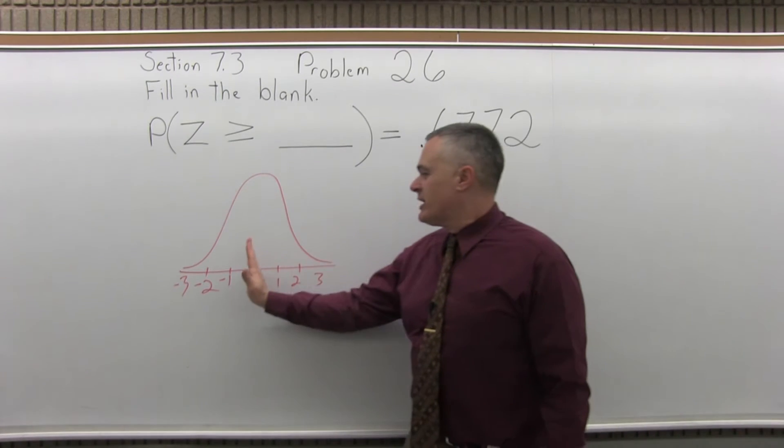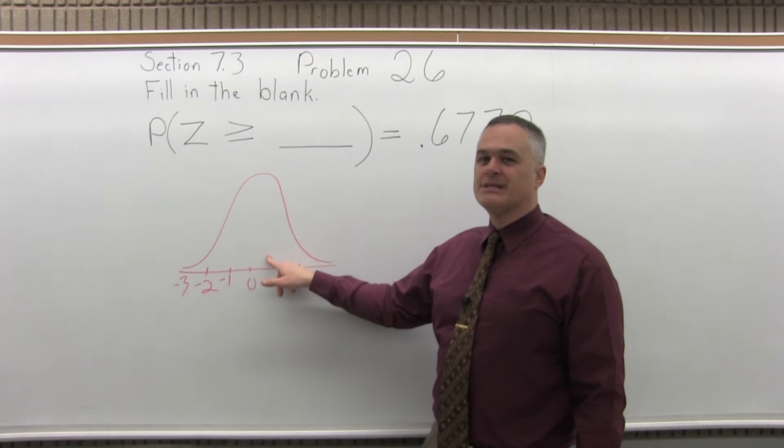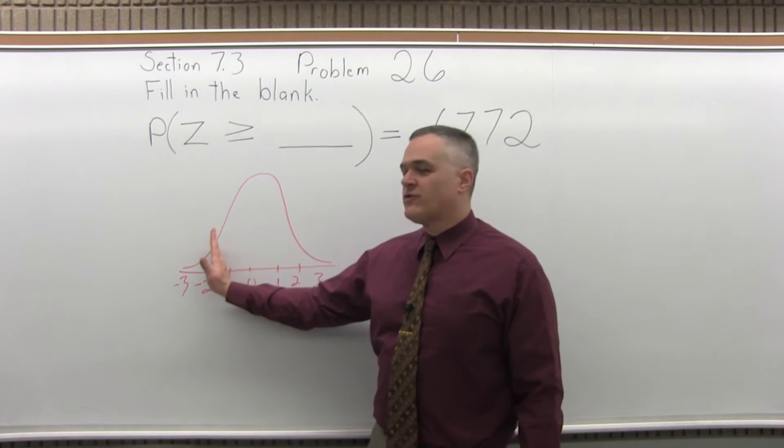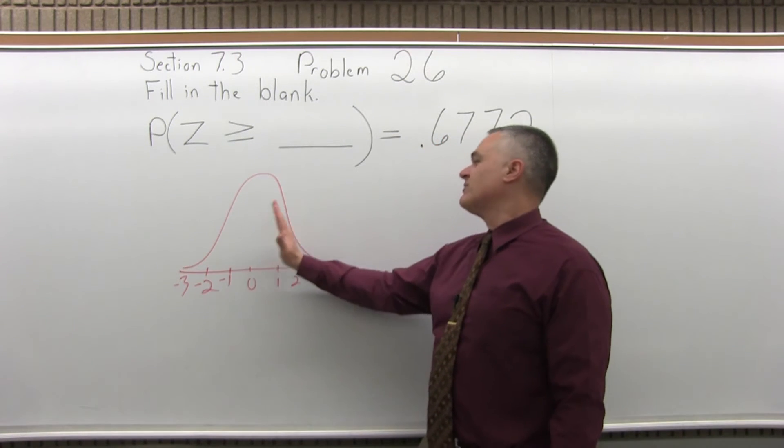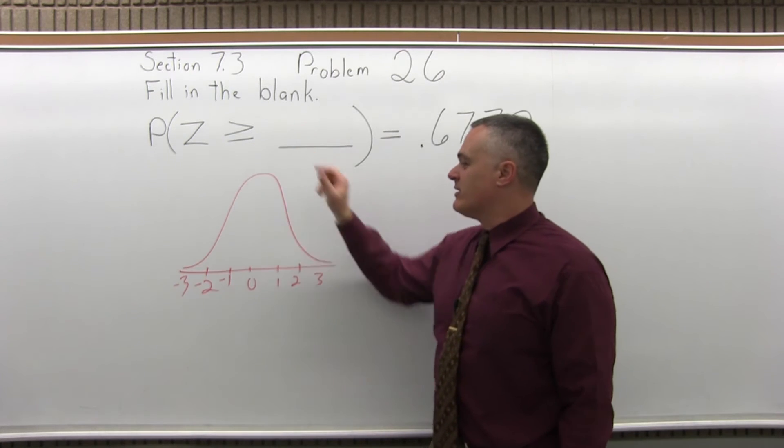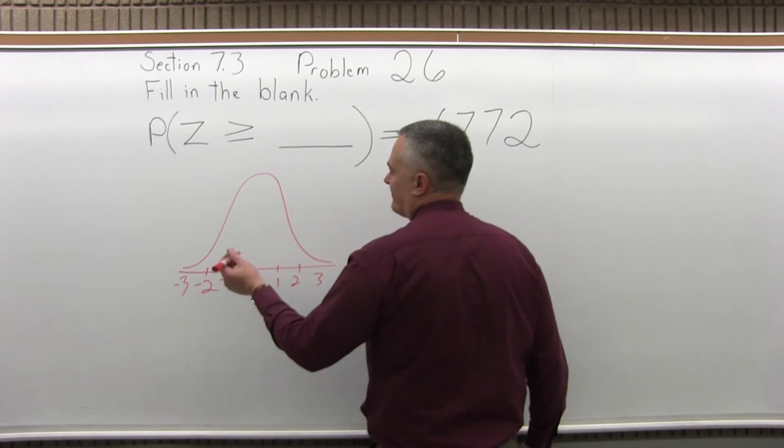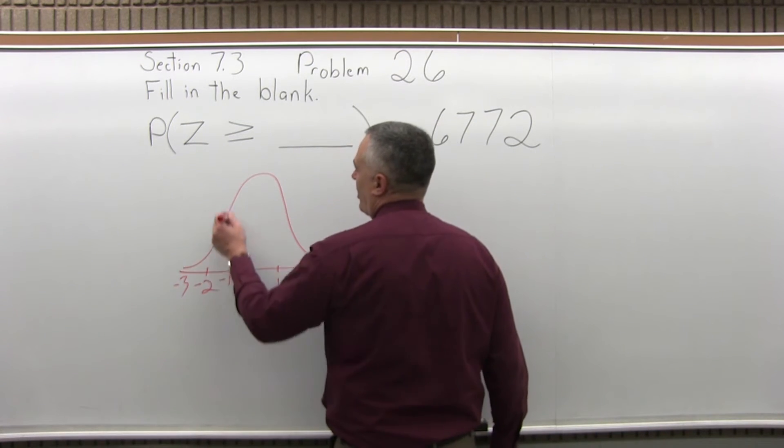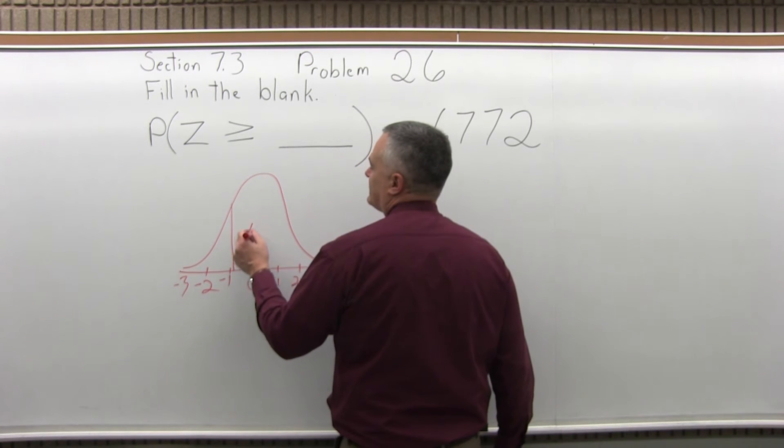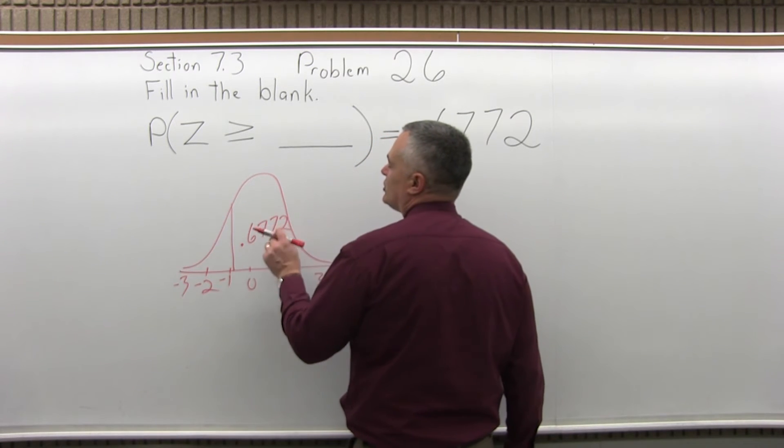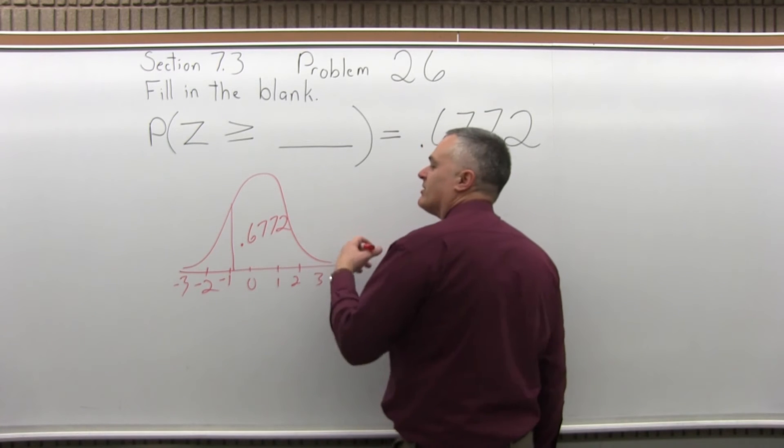If it was greater than 0, it would be 0.5. So 0.6 something, it's got to be a little bit further to the left to have 0.67 fit as a bigger value, greater than. Let's say somewhere close to the 1. So I have 0.6772 in the greater than, the bigger than side.